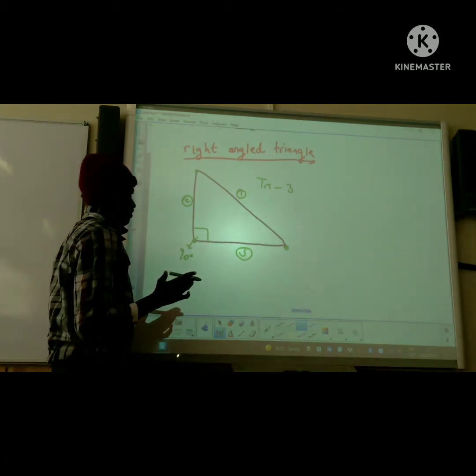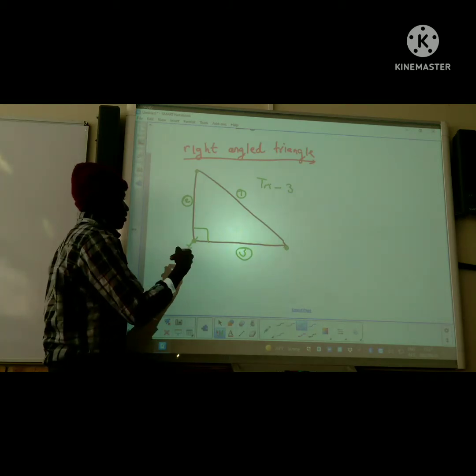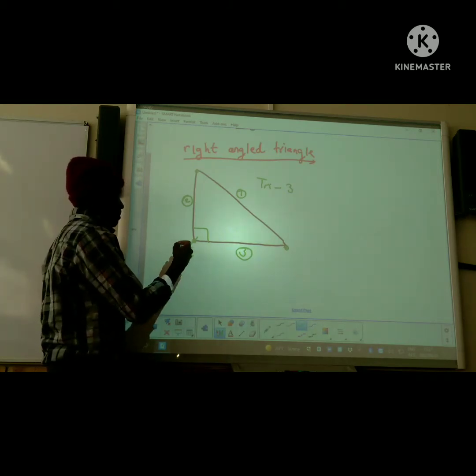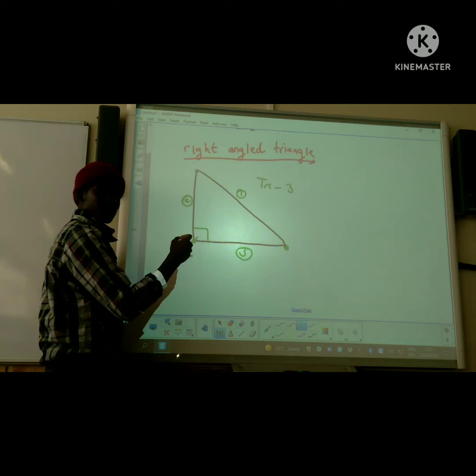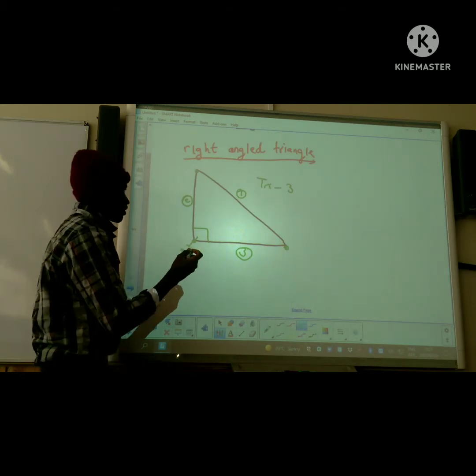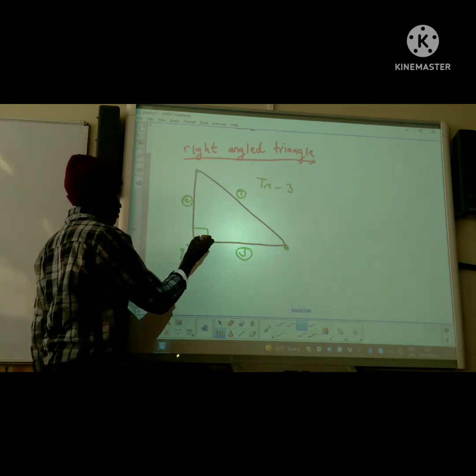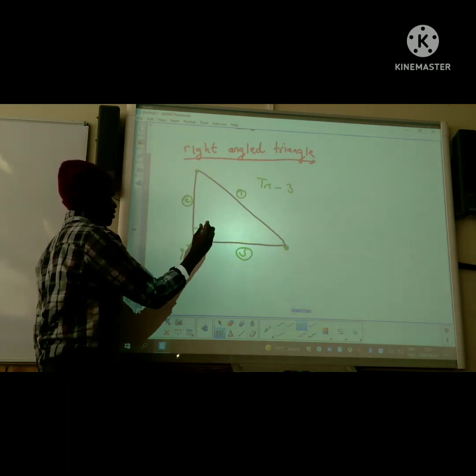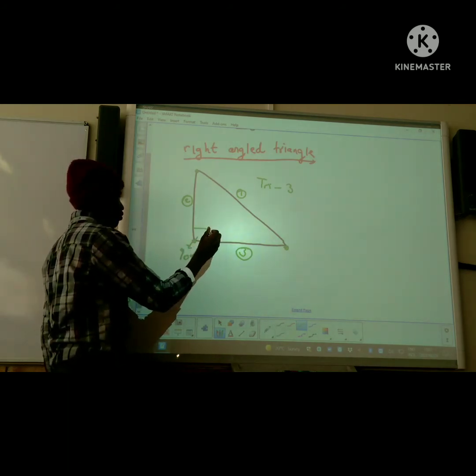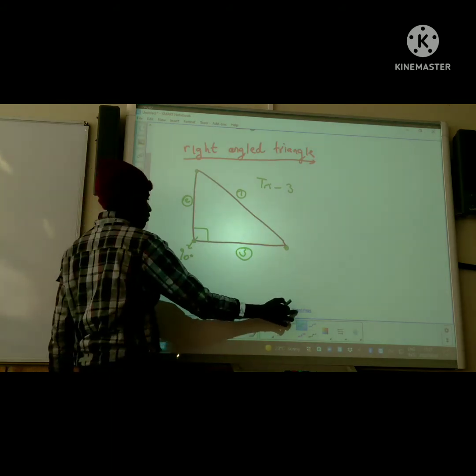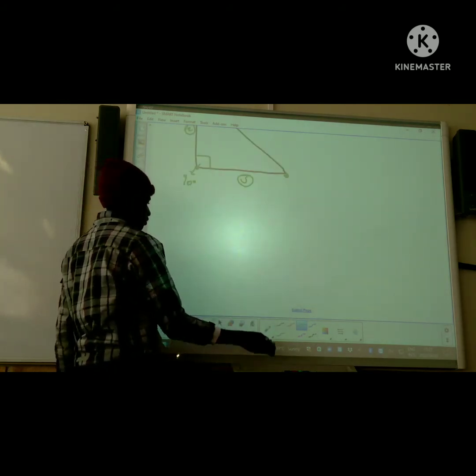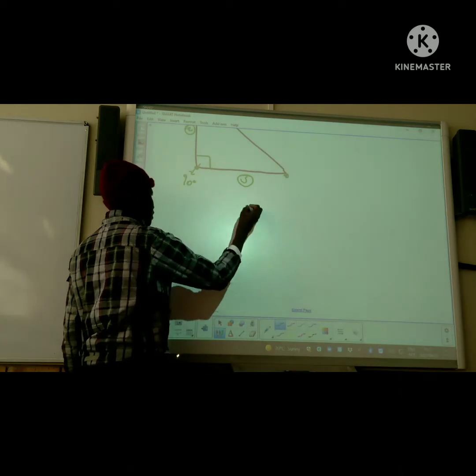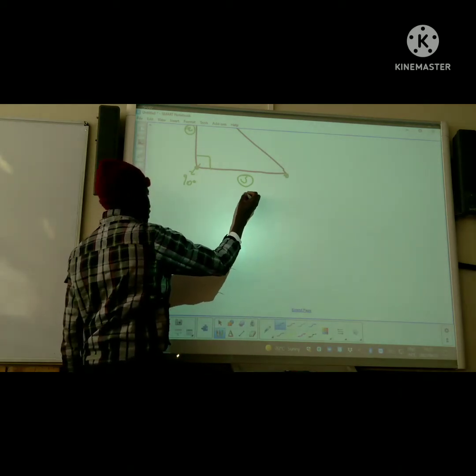As you can see, the 90 degrees is what indicates to us exactly what a right-angled triangle is. The right angle is the 90 degrees. This is the shape where trigonometry takes place. There's no other shape except the right-angled triangle that trigonometry takes place on.